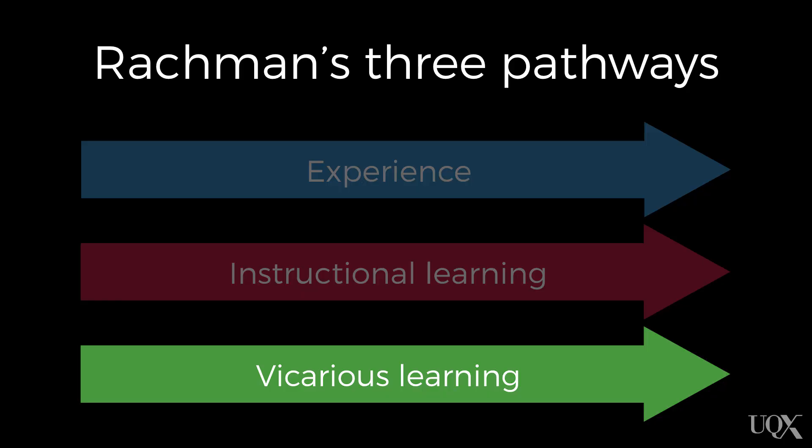The third pathway that Rachman proposed was vicarious learning. This is when you repeatedly see someone else — usually an important person in your life, such as a parent — behave fearfully when confronted by a particular stimulus, and then you develop that fear yourself.